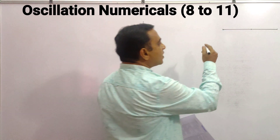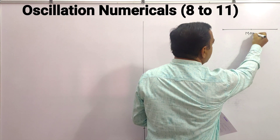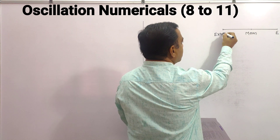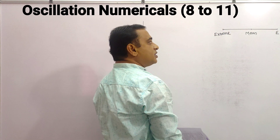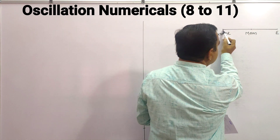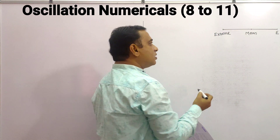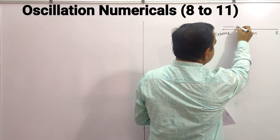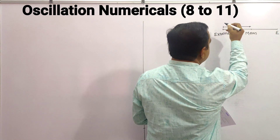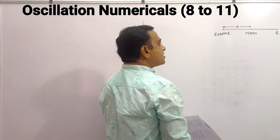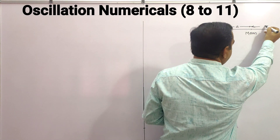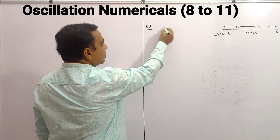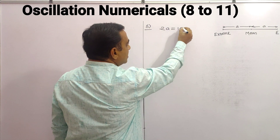If the particle is performing simple harmonic motion, this is known as the mean position, whereas the extreme positions are on either side. The total path covered by the particle during simple harmonic motion is known as the path length, which equals 2a. So total path length 2a is equal to 10 centimeter, as given.